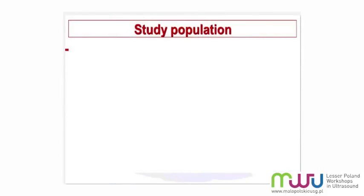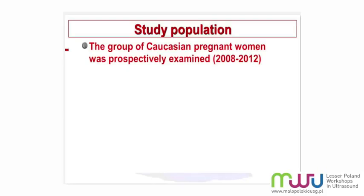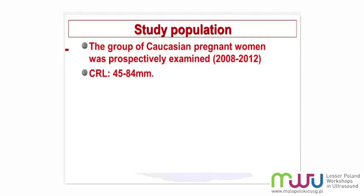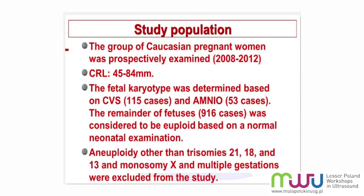The study population consisted of more than 1,000 patients scanned transabdominally with known postnatal or post-autopsy findings. We included cases of late first trimester and excluded cases of aneuploidy different than typical trisomies or monosomies X0, together with excluding multiple gestations.